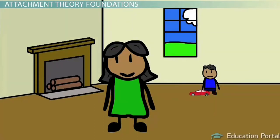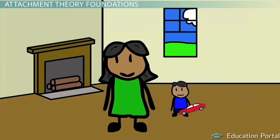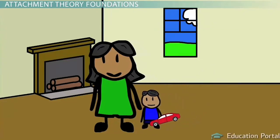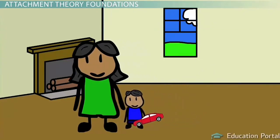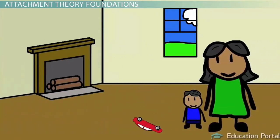A baby forms an attachment with his or her parent at birth. This attachment develops over time, and by around six to seven months a strong bond is formed. We know this attachment has occurred because the child tries to maintain proximity to the parent — the child may follow the parent around, saves the biggest smiles for the parent, becomes upset when the parent is gone, and seeks the parent when he or she feels threatened or scared.